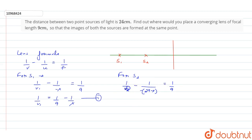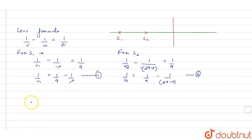Because we are taking the second source and its image formation point. So let's write 1 by v2 equals 1 by 9 minus 1 by 24 minus x. This will be our equation 2. Now we know that the sign convention of S1 and S2 are both opposite.